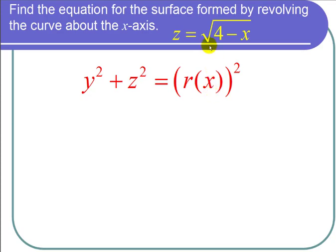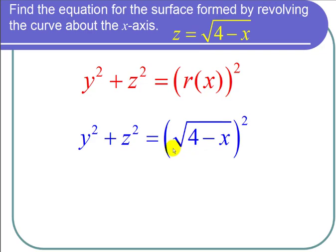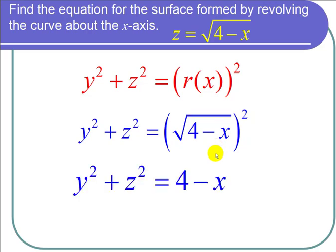Now we just plug in. R of x is the square root of 4 minus x, and then the square root of 4 minus x quantity squared is just 4 minus x. So I get y squared plus z squared equals 4 minus x.